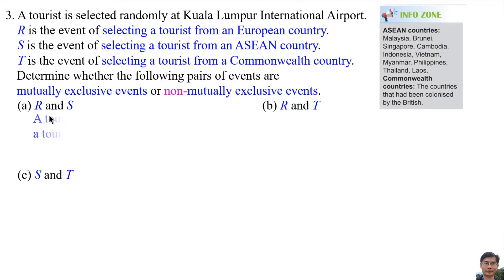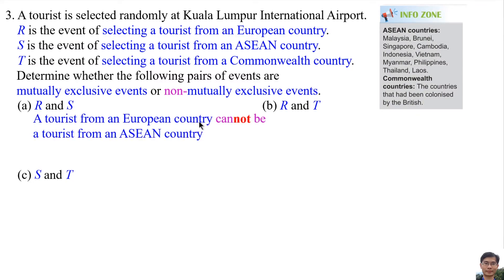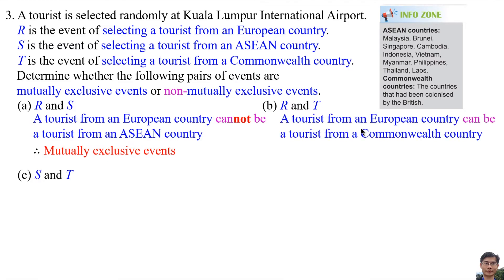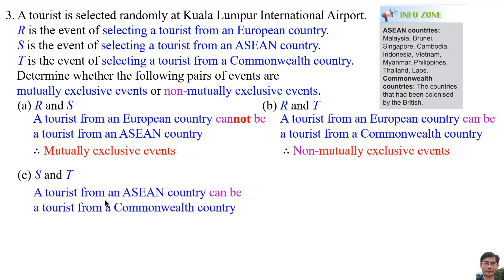Part A: R and S. A tourist from a European country cannot be a tourist from an Asian country, so R and S are mutually exclusive events. Part B: R and T. A tourist from a European country can be a tourist from a Commonwealth country, so R and T are non-mutually exclusive events. Part C: S and T. A tourist from an Asian country can be a tourist from a Commonwealth country, so S and T are non-mutually exclusive events.